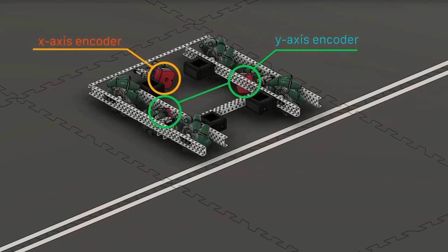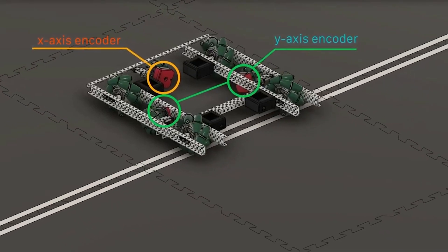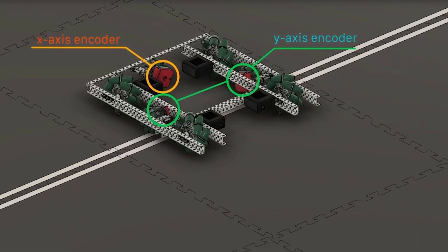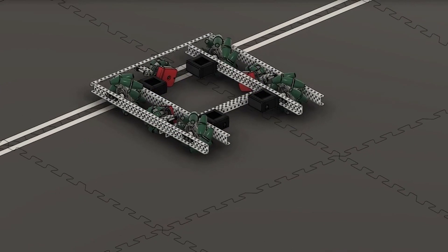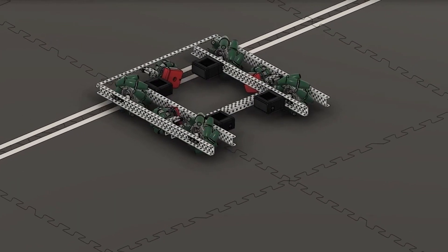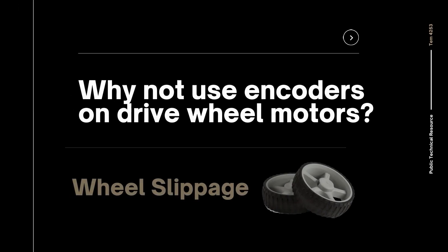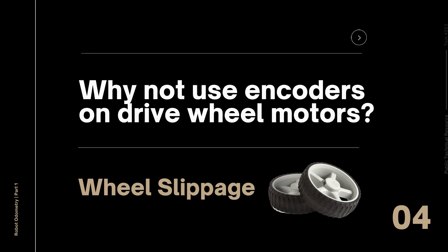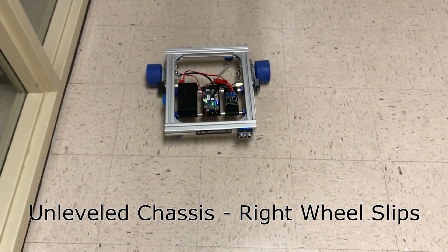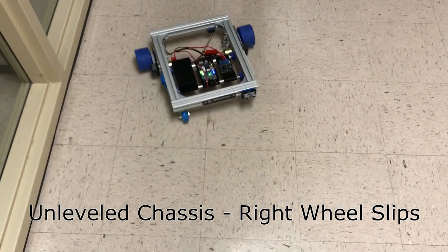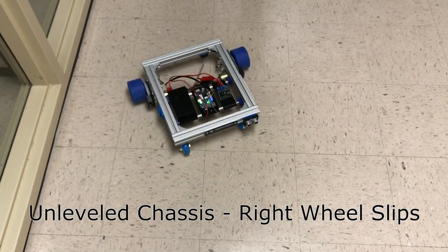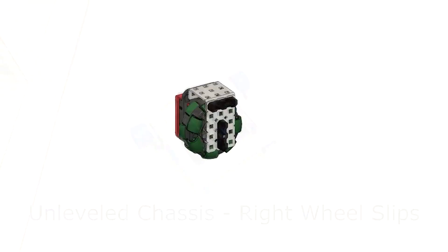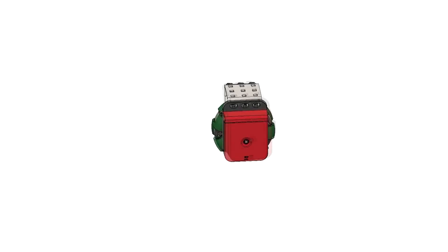These encoders will be attached to three non-driven omni wheels and positioned in this configuration, where the left and right encoders are parallel to each other, and the third encoder is perpendicular to the two. You might be wondering why not just use the encoders on the drive wheel motors, and the reason is because those wheels are prone to wheel slippage. When the robot accelerates and gives power to the motors, the drive wheels can slip a little bit before they actually gain traction and start to move. So it's more effective to add these three separate unpowered wheels, which we will call tracking wheels.